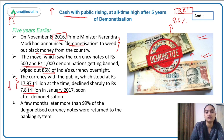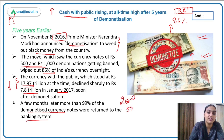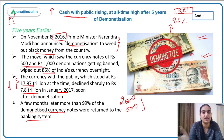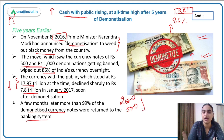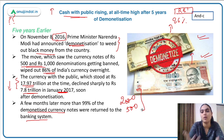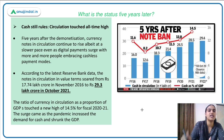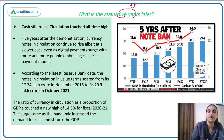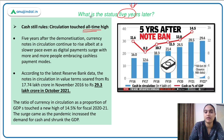More than 99% of the demonetized currency notes were returned back to the banking system. After the old notes were banned, new ₹2000 and ₹500 notes were printed and released into the economy, so the currency in circulation began to rise again. The cash taken away from the economy returned in a different form. After five years, the cash in circulation remains high and has reached all-time high levels.